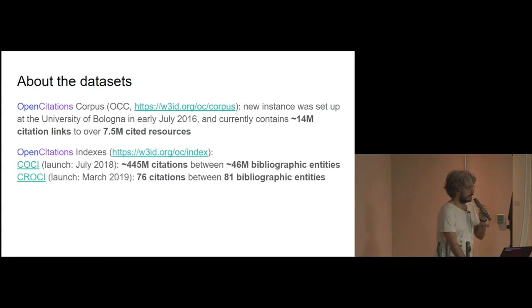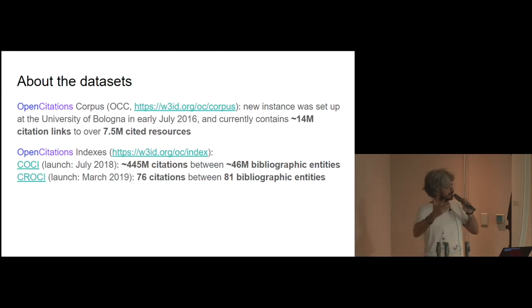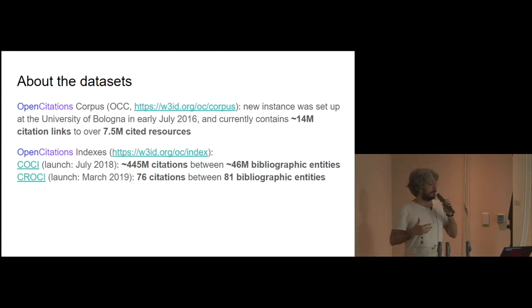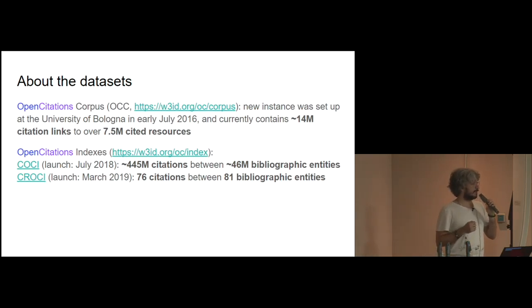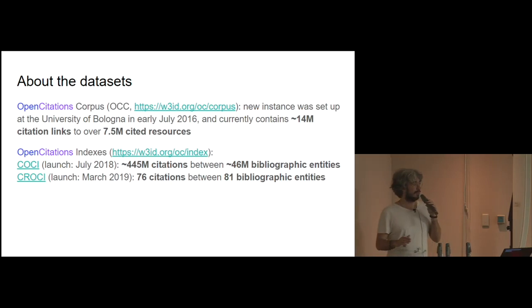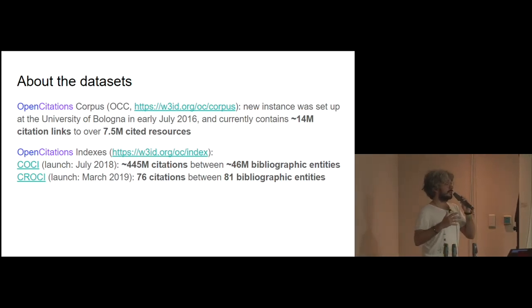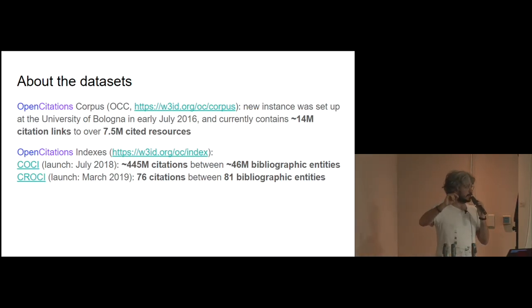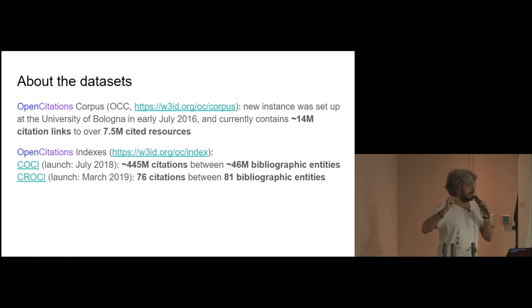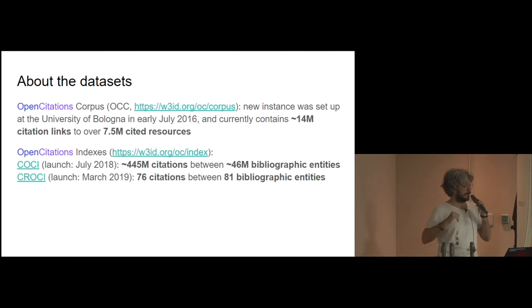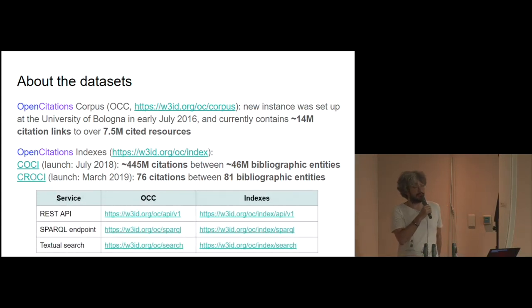About the datasets we are handling, there are two different kinds. The first one is called the OpenCitation Corpus, which is the original one, and now contains 40 million citation links between 7.5 million cited resources. Last year we also launched the OpenCitation Indexes, which are large containers of citation links. The main one, called COCI, contains 445 million citations between nearly 46 million bibliographic entities.